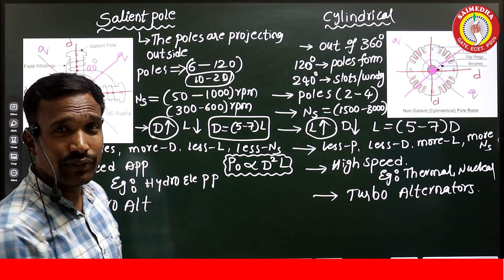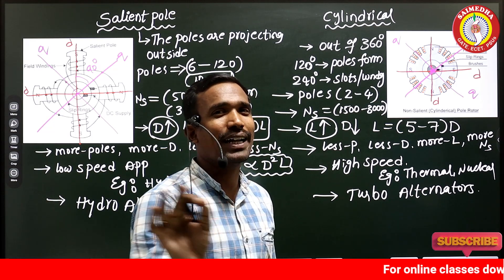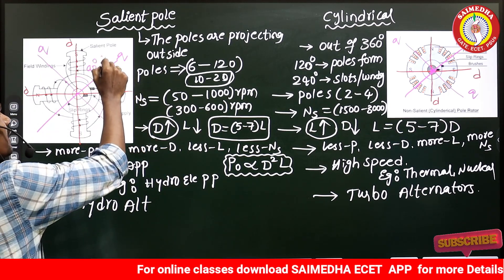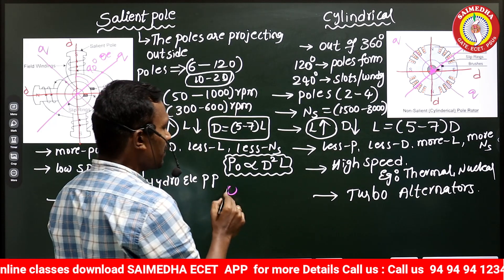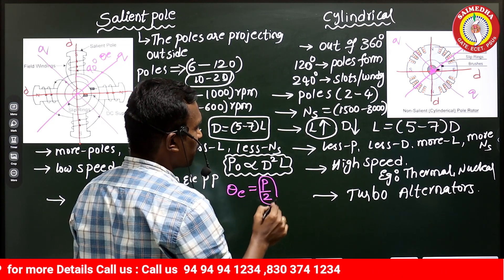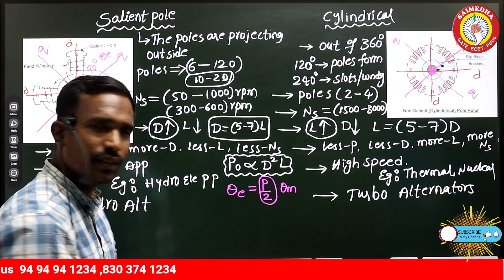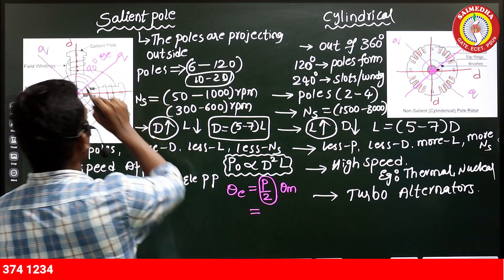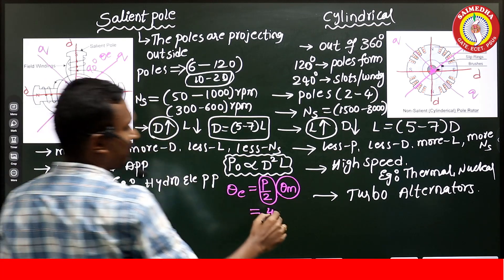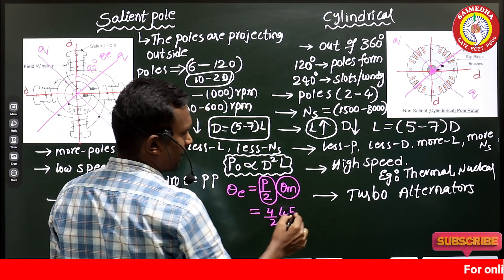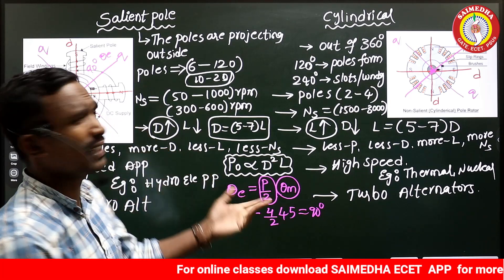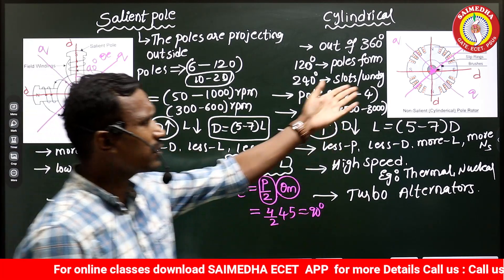It's showing 45 degrees here, but I am not discussing in terms of mechanical — I am discussing in terms of electrical. The angle between the q-axis and d-axis is 90 degrees electrical. The formula is: θ_electrical = (P/2) × θ_mechanical. With 4 poles: (4/2) × 45° = 90°. So electrically this is 90 degrees.